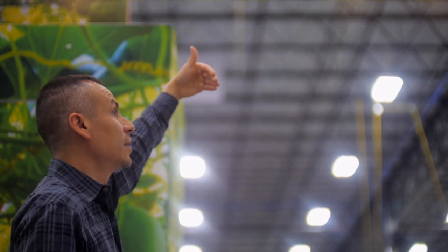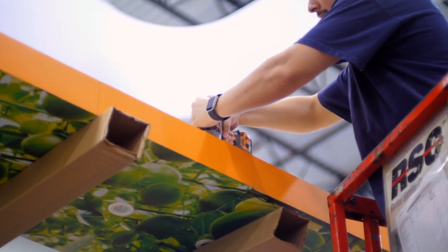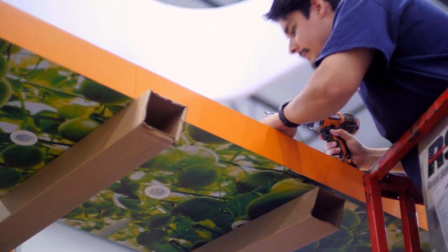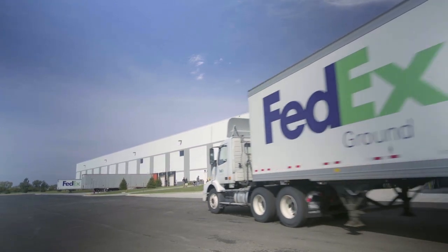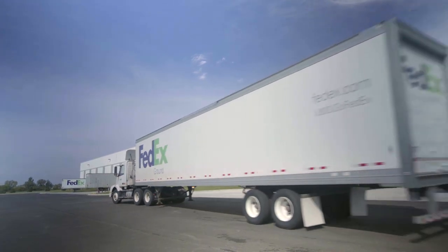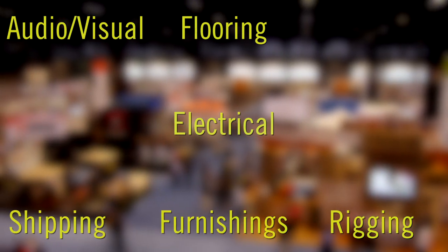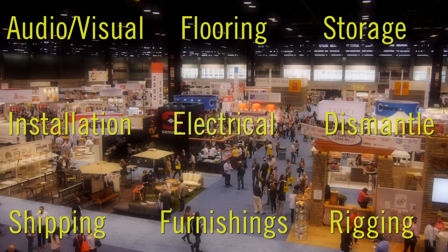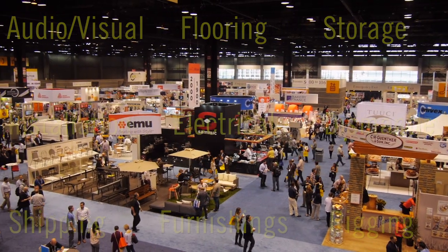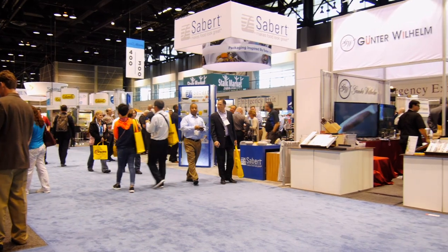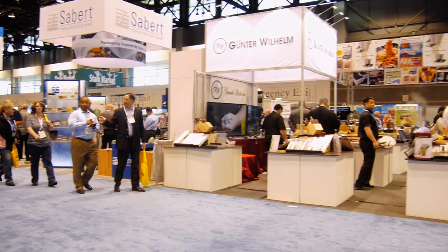Step eight: producing the custom trade show exhibit is only one piece of the complete exhibiting program. Some companies have internal teams that manage the logistics, installation, dismantle, and storage of exhibit assets, but may use their exhibit partner to assist in these areas. Exhibit partners can handle all show planning, coordination, and ordering — electrical, rigging, flooring, AV, furnishings, shipping, installation and dismantle, storage, and more.